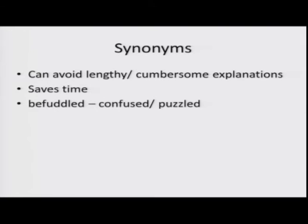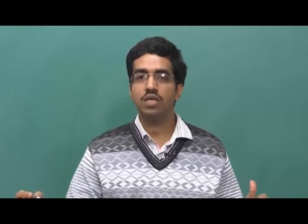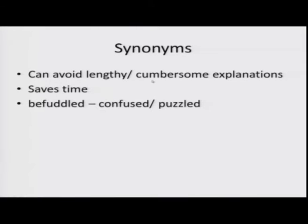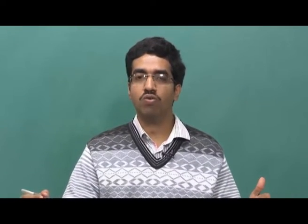The first kind is synonyms. If you come across an unfamiliar word, the easiest way is to define the term using a synonym. This can help avoid lengthy, cumbersome explanations and saves time. For example, the word 'befuddled' can be defined using synonyms like 'confused' or 'puzzled.' You can also give a translational equivalent — if someone does not understand the word in English, you can give its equivalent in the mother tongue.